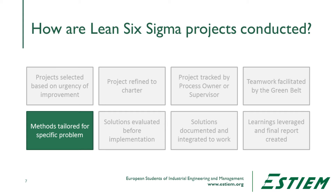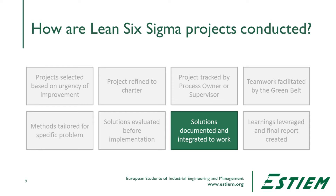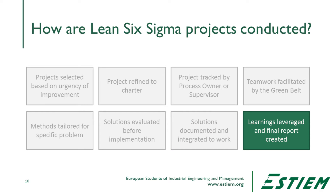Sometimes those tools won't work or aren't appropriate, so as a greenbelt you'll need to learn when to apply which tools and how to guide the team through them. You may also want to check with someone at the black belt level to find out if there are other tools beyond the scope of greenbelt training. Once we've done the problem-solving and demonstrated it, we want to evaluate the solution prior to implementation to make sure it works, document it, integrate it into work, and take lessons learned across the organization.